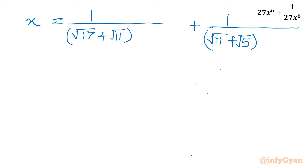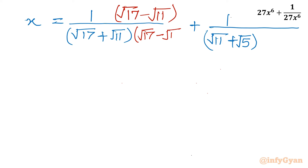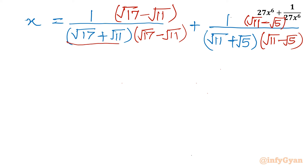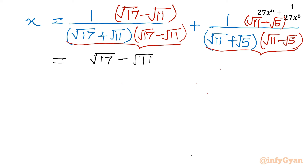Now I will use rationalization. Let's multiply numerator and denominator by (root 17 minus root 11). For the second term I will be multiplying numerator and denominator by (root 11 minus root 5). If you notice the denominator, it is of the form (a + b)(a − b), which is the difference of two squares. So I will be writing root 17 minus root 11 divided by root 17 squared minus root 11 squared.